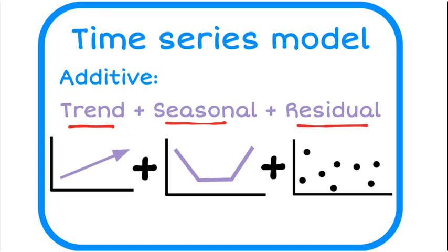And then the residual — the leftover parts. The trend and the seasonal are the main ones. There is also a cyclical component that we will sometimes refer to, but that's usually beyond curriculum level at high school.